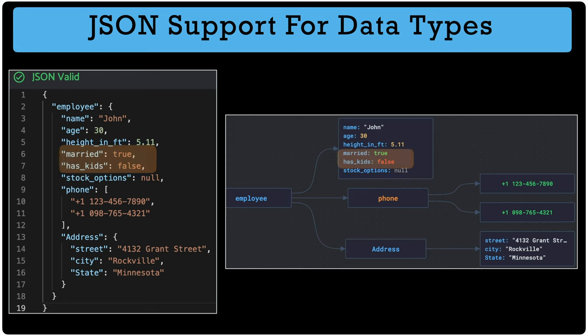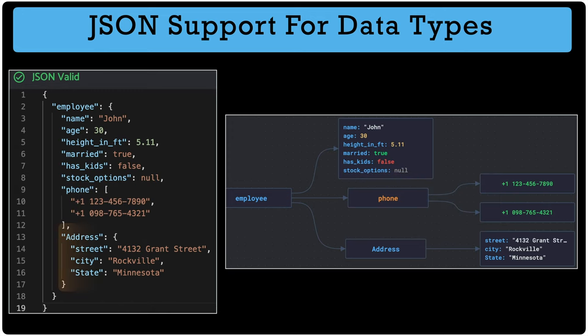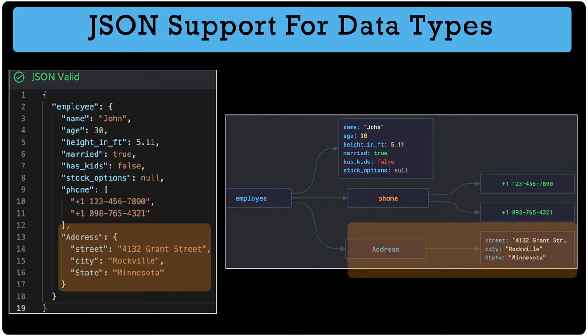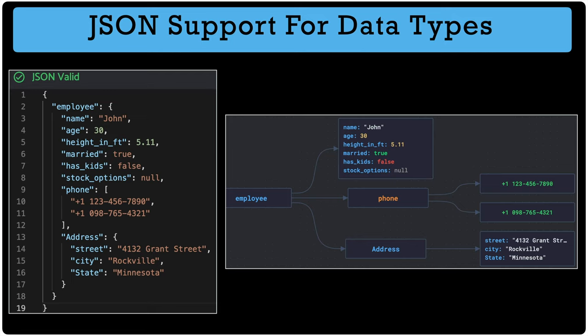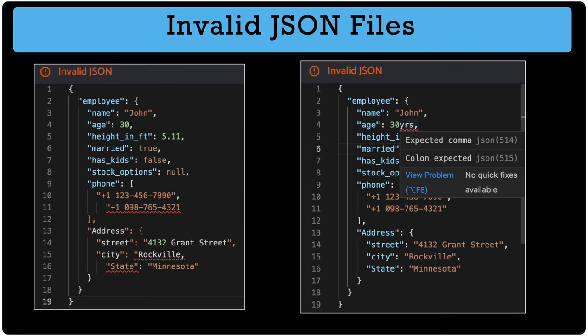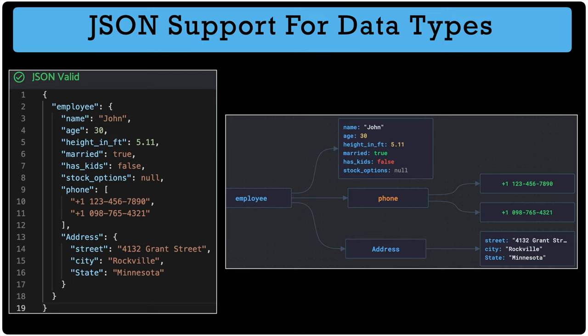Now we know how JSON differs from CSV and what rules it follows for structuring data and data types. If these rules are not followed, JSON files are treated as invalid. One important point: JSON does not natively support date, time, and timestamp data types — they are treated as plain strings. We'll see if Snowflake can identify date and time data types while processing the JSON string.